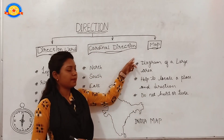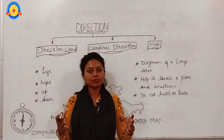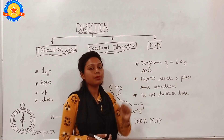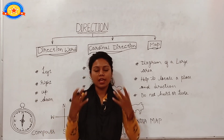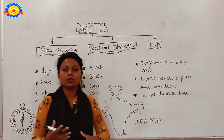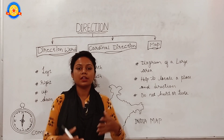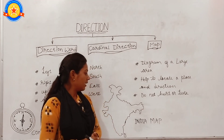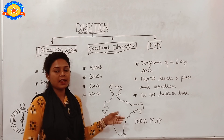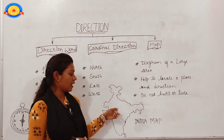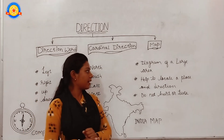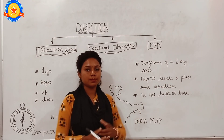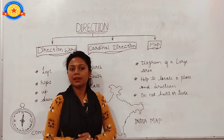Next we have the map. The book of maps is called an Atlas, and a map is a diagram of a large area. We can have a map of a country, a large city, or even a small colony. Here I have shown you the India map. This map helps us locate a place and find direction.